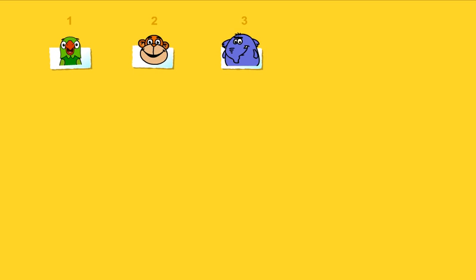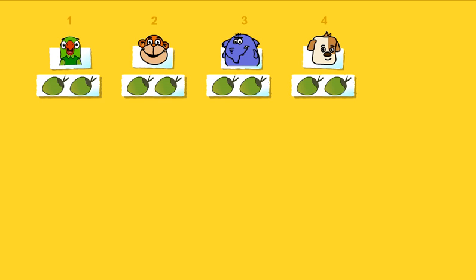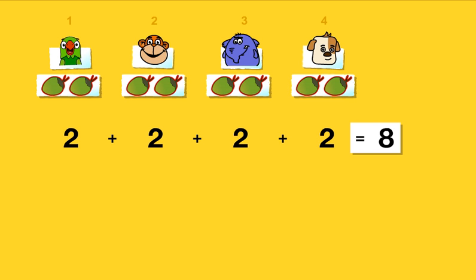There will be four people at the party, and Gull wants to give each person two coconuts. So, two plus two plus two plus two equals eight. All together, Gull needs eight coconuts for his party.